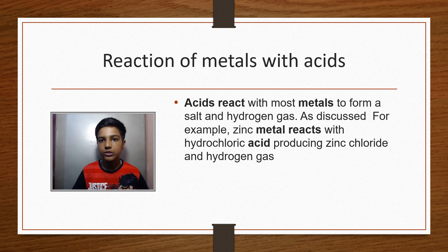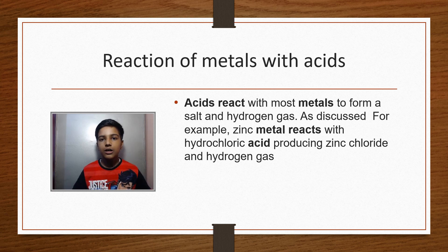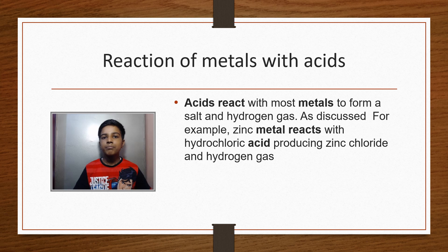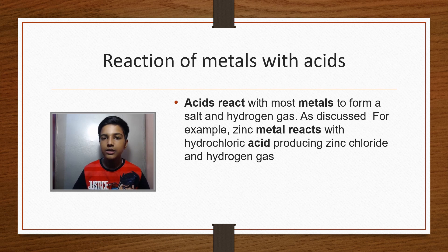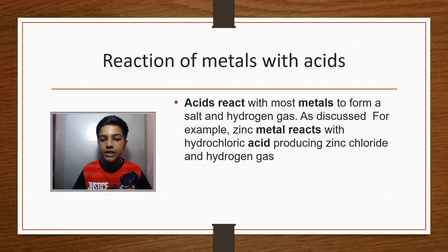Once the gas comes out as bubbles from the metal test tube, light a matchstick or candle and place it near the bubbles. You will notice a pop sound — this pop sound indicates that the gas released is hydrogen gas. You will not notice this pop sound with non-metals, because non-metals do not react with acids. So acids react with most metals to form salt and hydrogen gas.